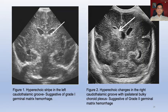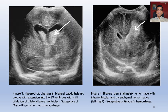Coming to some of the images: the first image shows a hyperechoic stripe in the left choroidothalamic groove, indicated by the white arrow, suggestive of grade 1 Germinal Matrix Hemorrhage. The second image shows hyperechoic changes in the right choroidothalamic groove with ipsilateral bulky choroid plexus, suggestive of grade 2 Germinal Matrix Hemorrhage. Figure 3 shows hyperechoic changes in bilateral choroidothalamic grooves with extension into the third ventricle and mild dilatation of bilateral lateral ventricles, suggestive of grade 3. The last image shows bilateral Germinal Matrix Hemorrhage with intraventricular and parenchymal hemorrhage, left side more than right, suggestive of grade 4 hemorrhage.